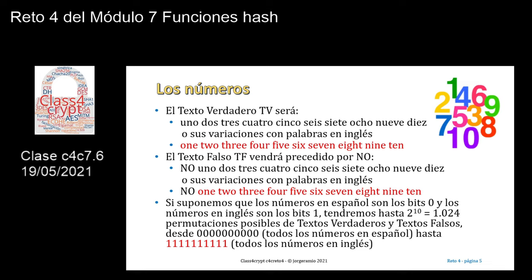Lo mismo va a suceder con el texto falso. El texto falso va a ser exactamente lo mismo, solamente que viene precedido por NO mayúscula, espacio. Con lo cual, el texto falso va a ser NO, 1, 2, 3, 4, etc. Y en el caso de que sean todas las letras en inglés, sería un NO, one, two, three, four, five, six, seven, eight, nine, ten.